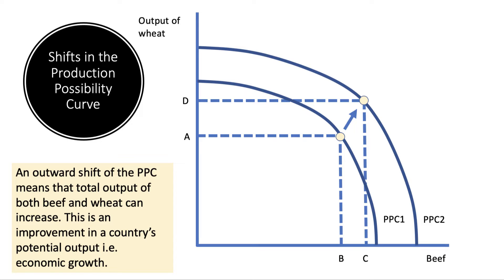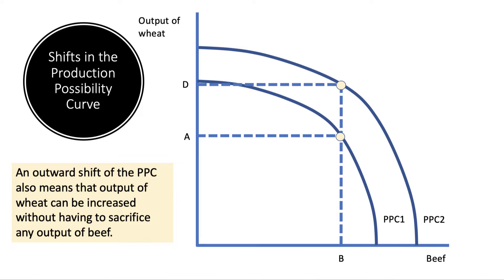Another aspect is the impact on opportunity cost. Let's say we want to maintain output of beef at output B. If the curve shifts out from PPC one to PPC two, as we've done here, then we can increase the output of wheat without having to sacrifice any output of beef. So in that sense, the trade-off has improved.